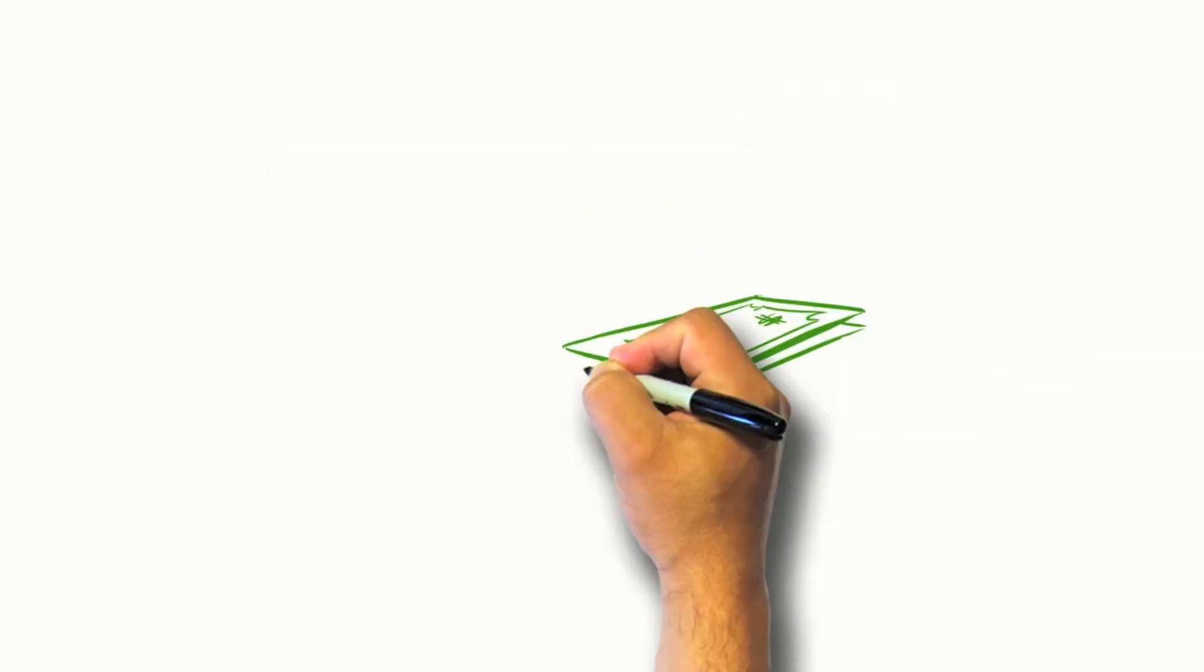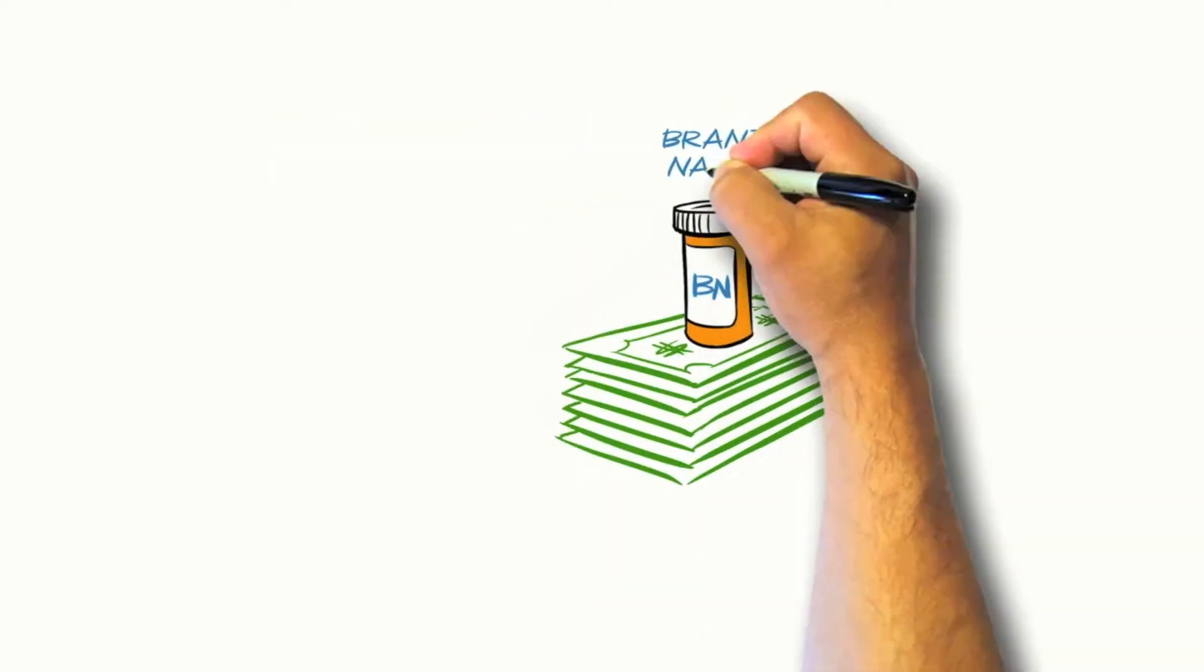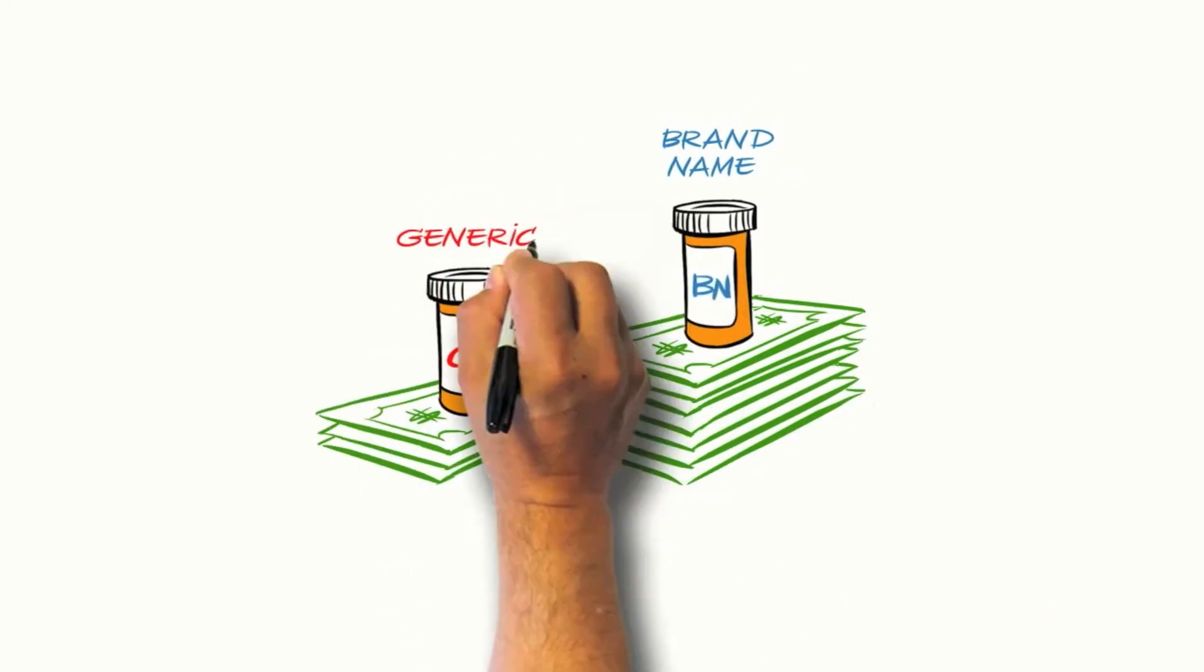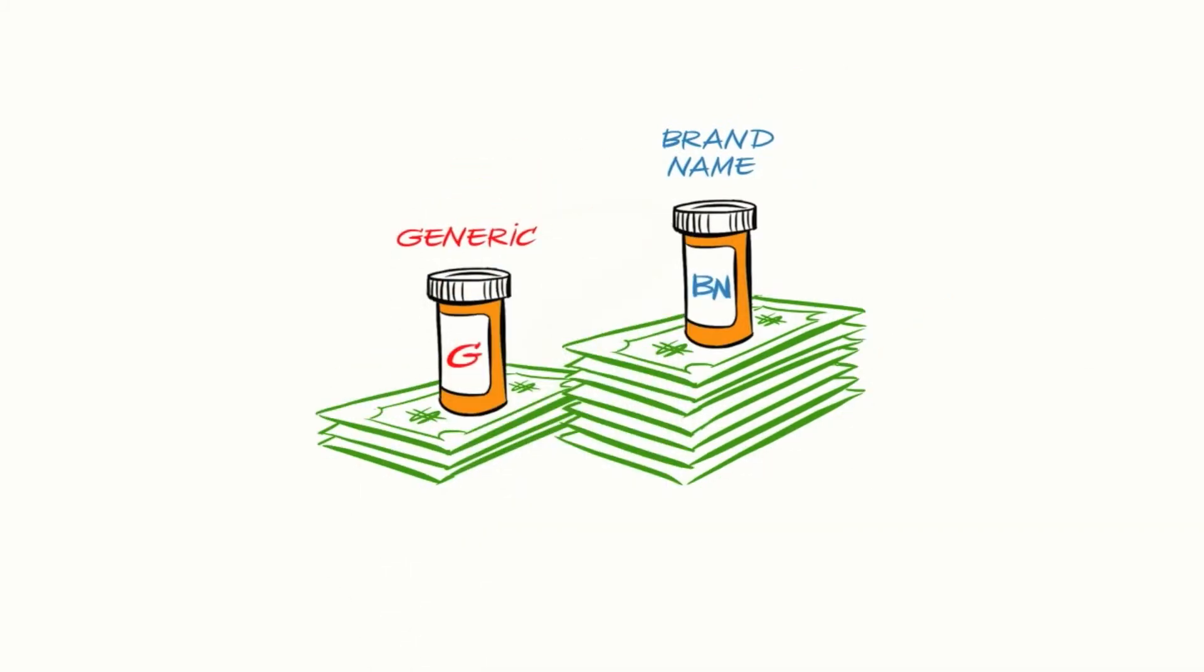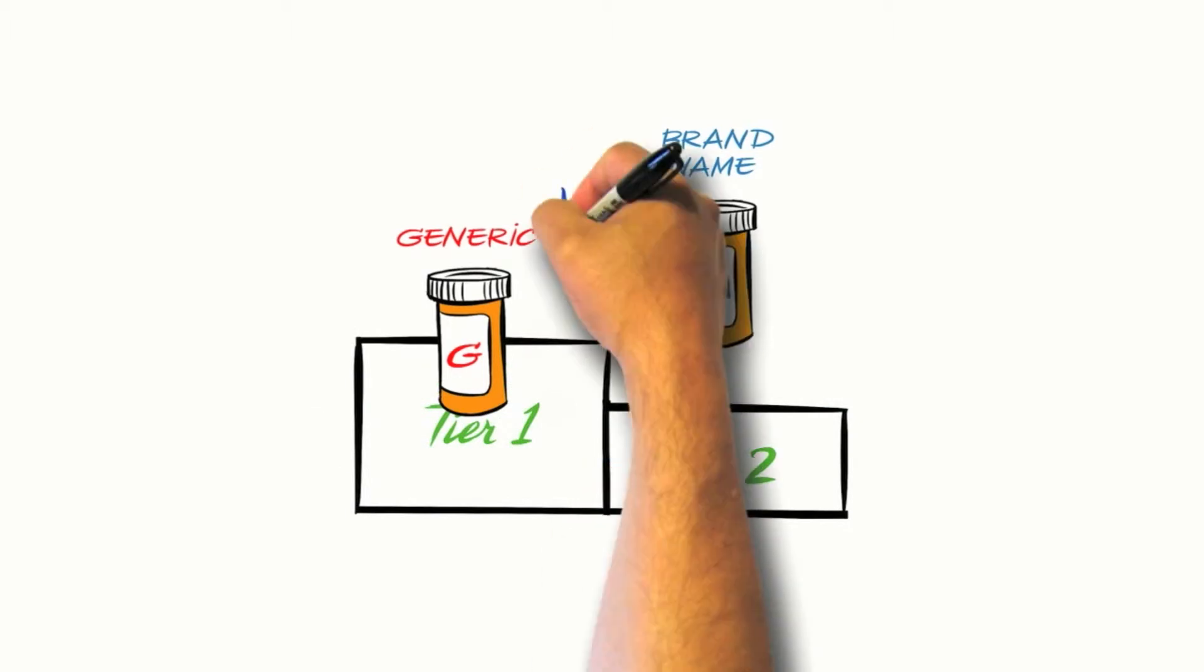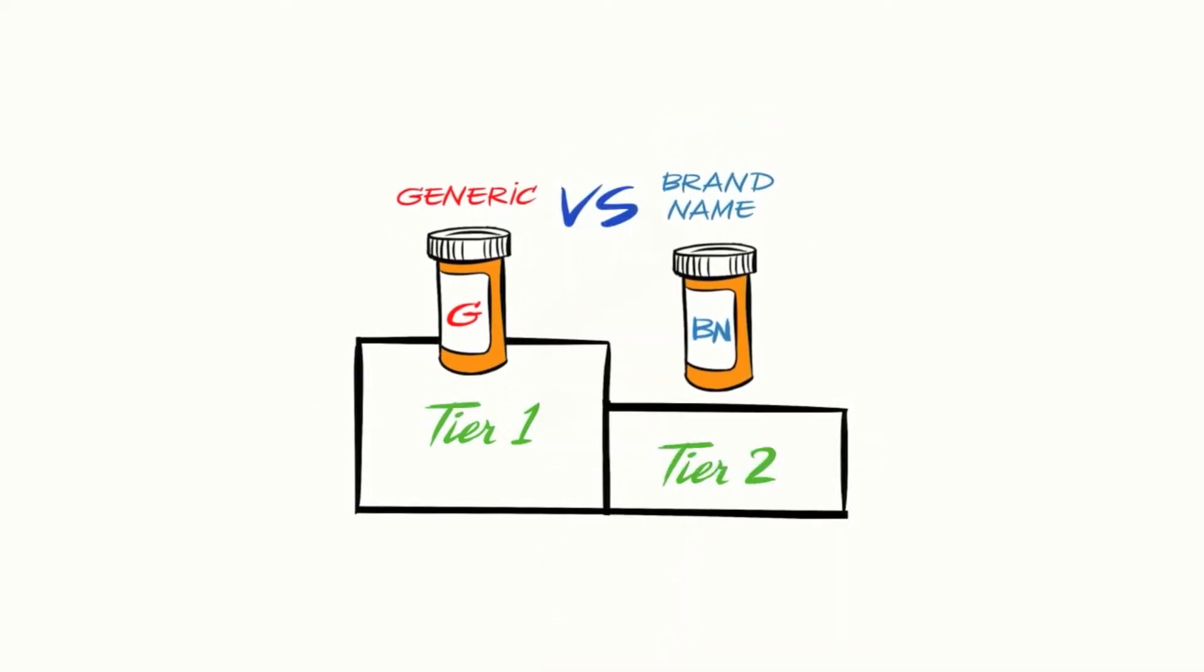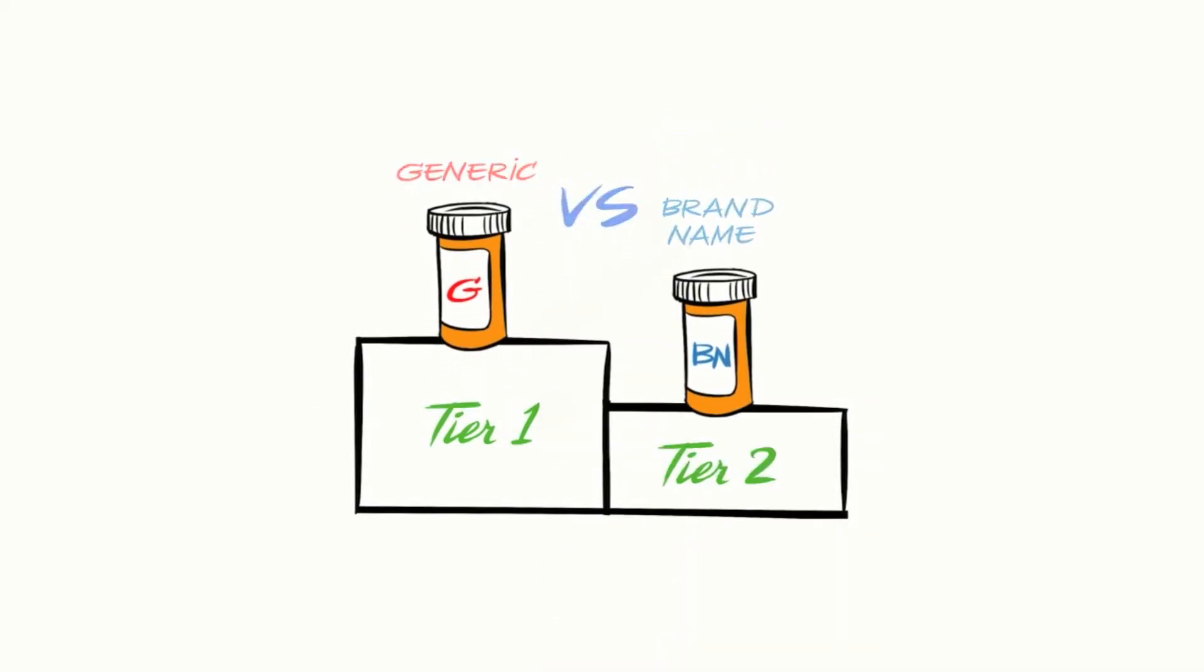Why pay for brand-name drugs when there are equally effective generics available at a fraction of the cost? Tier one is mostly made up of generic drugs, while tier two contains brand name drugs which do have equally effective but lower cost alternatives. Plan members receive more coverage if they purchase drugs that are in tier one as opposed to drugs from tier two.